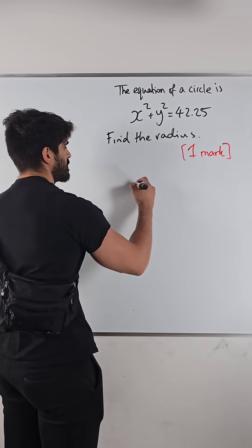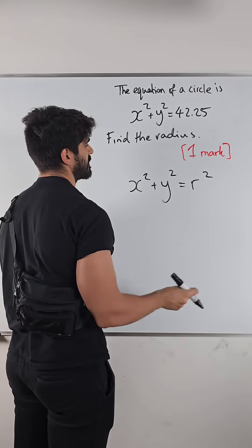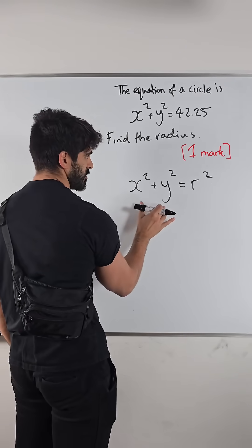The general form of a circle is x squared plus y squared is r squared. And at GCSE, the center will always be at 0, 0, which is what this is indicating.